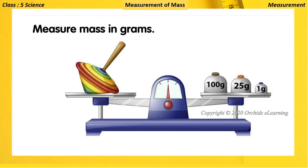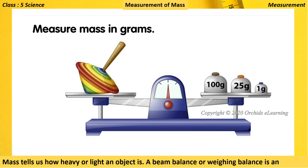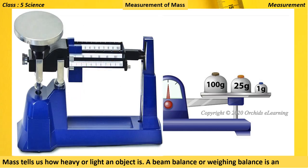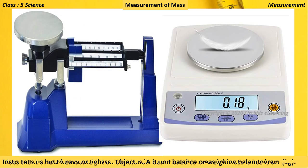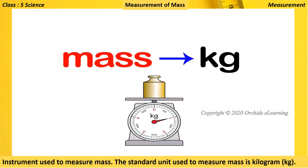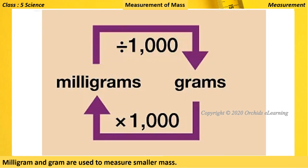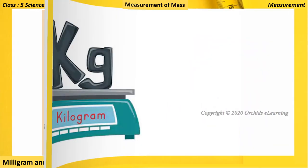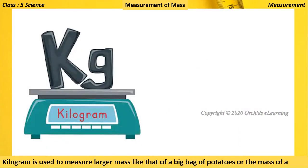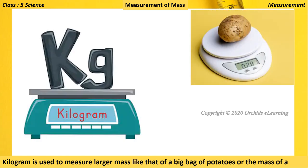Measurement of mass: mass tells us how heavy or light an object is. A beam balance or weighing balance is an instrument used to measure mass. The standard unit used to measure mass is the kilogram. Milligram and gram are used to measure smaller masses. A kilogram is used to measure larger mass, like that of a big bag of potatoes or the mass of a person.